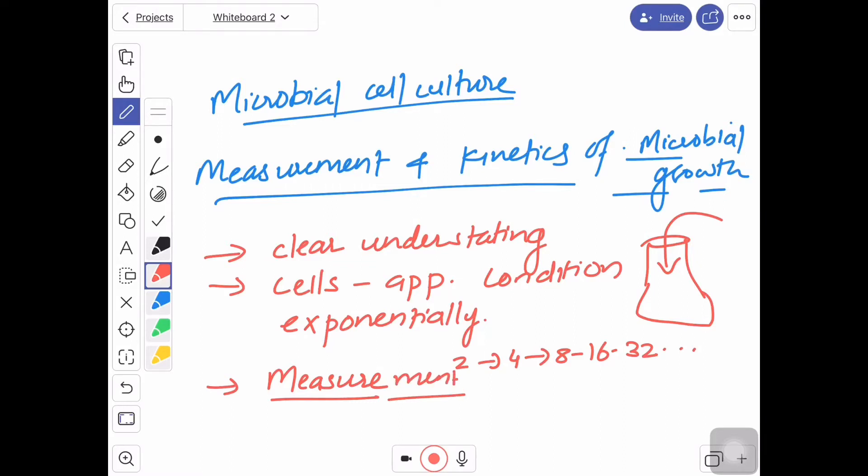You know, bacteria grow by binary fission, yeast divide by budding, fungus by chain elongation and branching, and viruses have different patterns of growth based on the host. Let us see how generally we go for measurement of microbial growth.